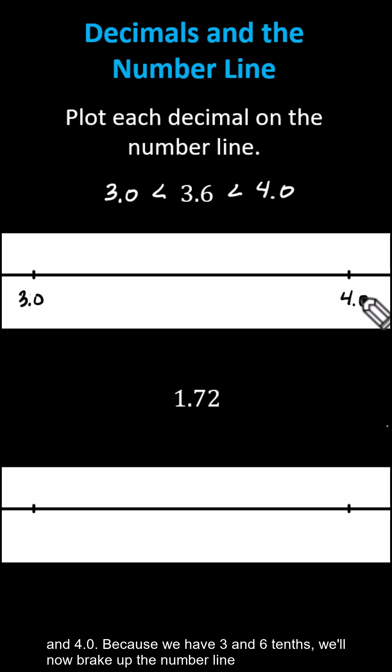And because we have 3 and 6 tenths, we'll now break up the number line from 3 to 4 into 10 equally sized parts, where each tick mark will represent 1 tenth.